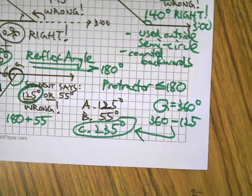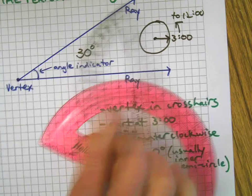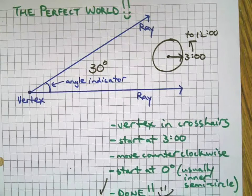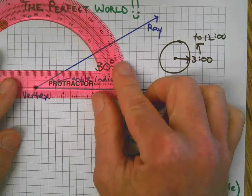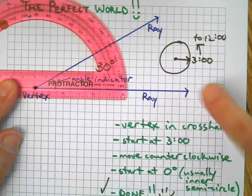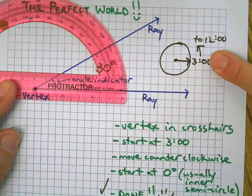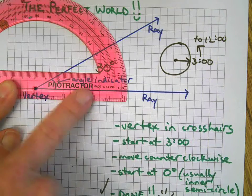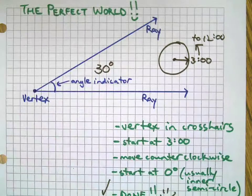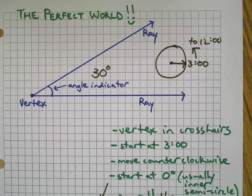Let's wrap this up. These are protractors, they measure angles. Do your best to make it a perfect world. Be nice to other people and put the vertex in the crosshairs or the little hole right there. Start at three o'clock over here - if you don't know that, learn how to tell time. Move counterclockwise, that means this way, and start at zero: zero, ten, twenty, thirty. Done. Thanks for watching this final video of the 2015 school year. Please comment or send me a message and let me know what new ones you'd like to see me make. Have a great summer, thanks for watching, bye.